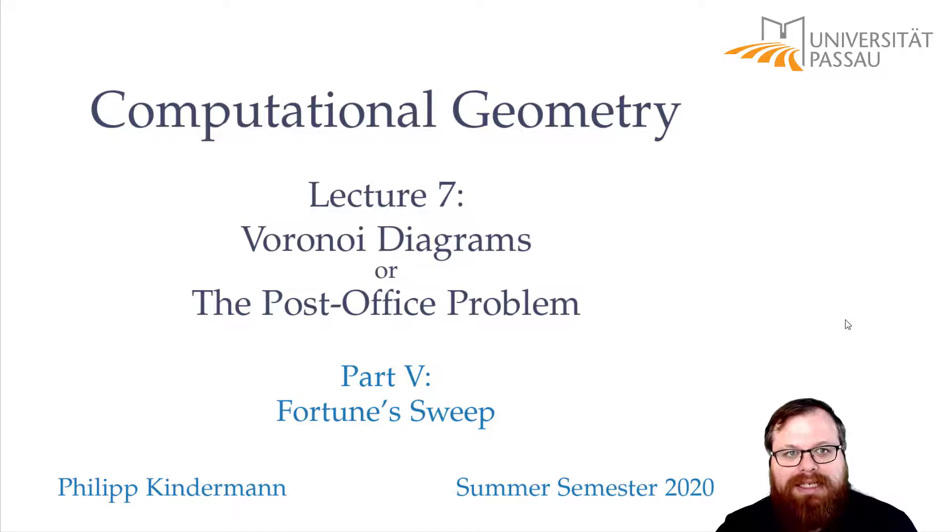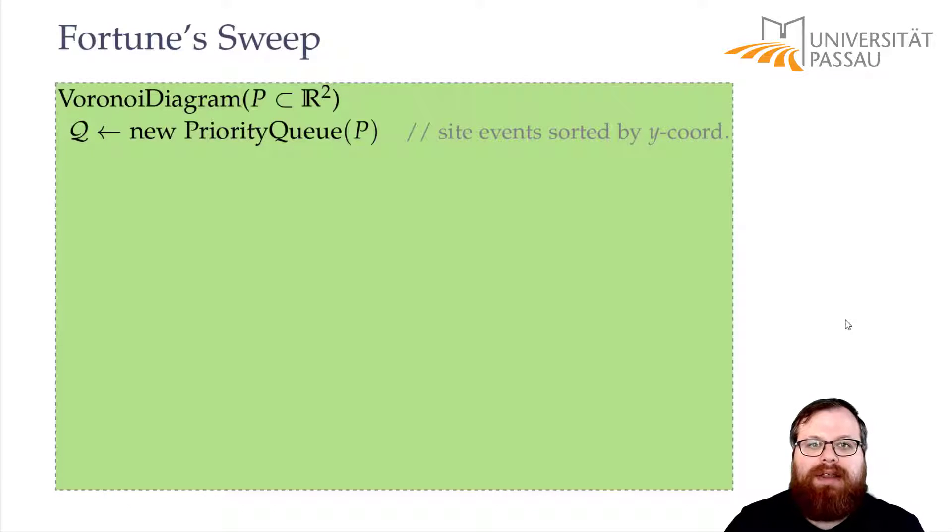Because the beachline, that's many parabolas, and then we still have to find the breakpoints and the event points and so on. And that's the fortune sweep. Let's have a look at it together.